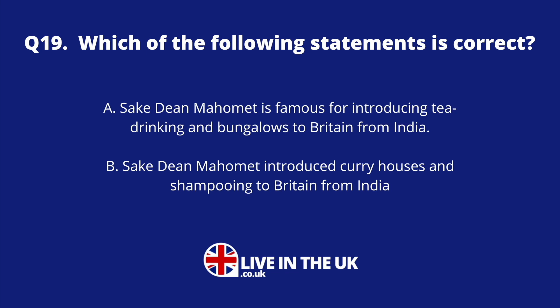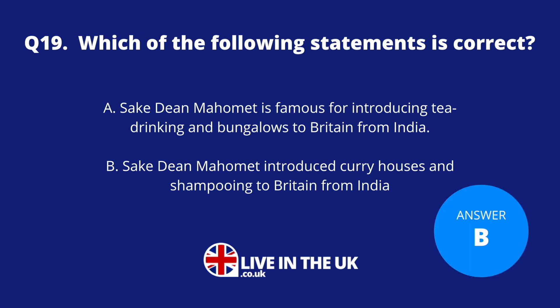Question nineteen: Which of the following statements is correct? A. Sake Dean Mahomed is famous for introducing tea drinking and bungalows to England from India. Or B. Sake Dean Mahomed introduced curry houses and shampooing to Britain from India. The answer is B — he did open the first curry house in Britain.